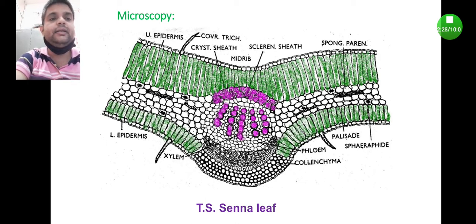The lamina part consists of upper epidermis, then followed by covering trichomes which are attached to the epidermal cells, then you will find stomata.